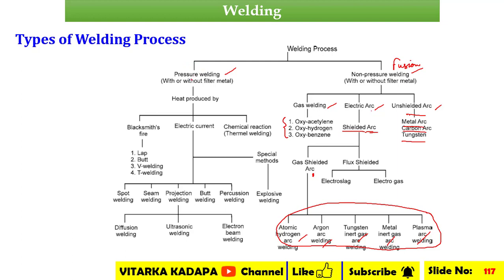Coming to pressurized welding — in this type, heat is produced due to pressure, and we can term it as blacksmith's fire. In this category, we have lap joint, butt joint, V-joint, and T-welding joint. With the help of electric current, we get spot welding, seam welding, projection welding, butt welding, and resistance welding. From projection welding we have two further classifications: diffusion welding, ultrasonic, and electron beam welding.